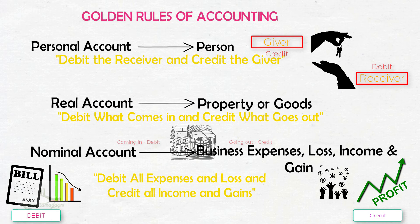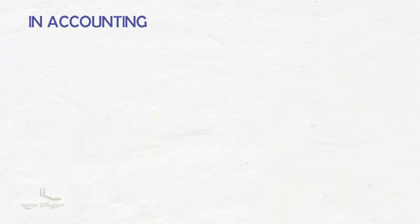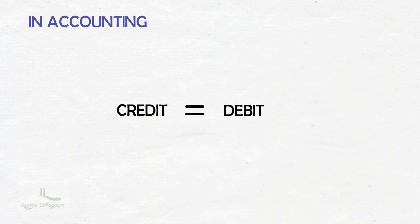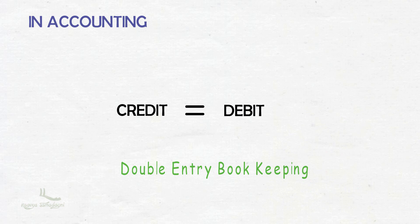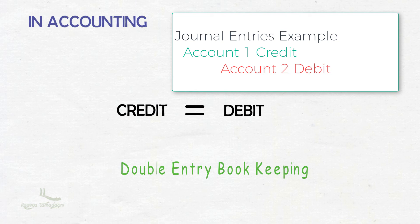In accounting, there are always two entries involved — one credit and one debit entry. Total debit should be equal to total credit. That's why we call it double entry bookkeeping. Two entries will always be posted, and these entries are known as journal entries in accounting.